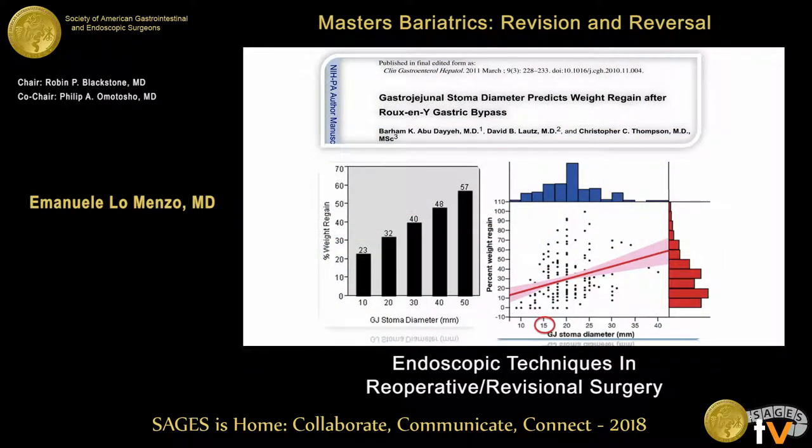This slide has already been discussed by Dr. Higa, so we're not going to go into details. But this is really the fundamental reason why people perform endoscopic pouch and anastomosis reduction — based on this data showing a linear correlation between the size of the anastomosis and weight regain, using 15 mm as the cutoff point balancing good weight loss with tolerance of oral intake.